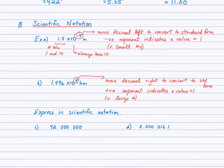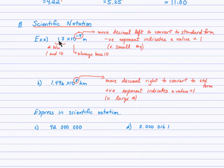Moving on to scientific notation. Scientific notation is a convenient form to express very large or very small numbers. You will always see a decimal value between 1 and 10 — more precisely, a number between 1 and 10 where the decimal comes after a non-zero digit. Then we multiply by a power, always with base 10. That exponent gives you an idea of how to convert the value into standard form. A negative exponent indicates the actual value is less than 1.